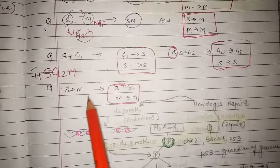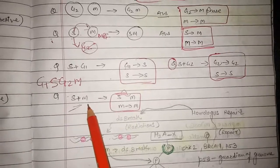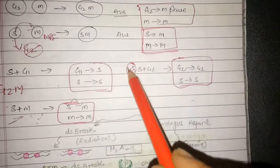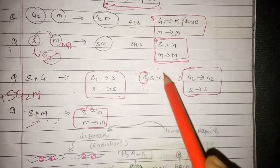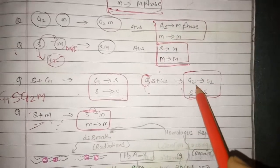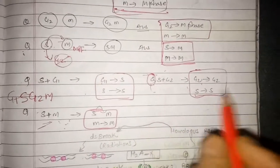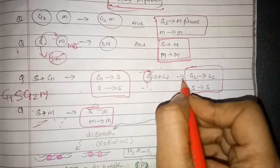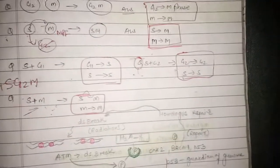Next, when S and M phase are fused together, the S phase cell will go to M phase — the mitotic phase — and the M phase will remain in M phase itself. And when S plus G2 are fused together, the S phase cell will remain in S phase, whereas G2 will remain in G2 itself. The sequence G1, S, G2, M holds. So these are the cell fusion experiments.